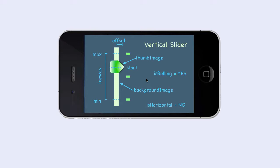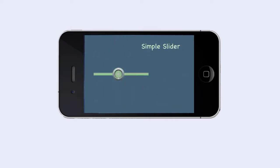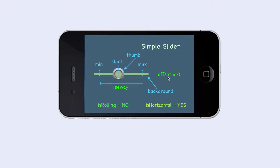In that case, we can give some of these parameters default values so that we do not need to specify them. Suppose that we have the following simple slider. Which parameters can be default for simple sliders? Simple sliders are horizontal, so isHorizontal can be set to Yes. Simple sliders always start at the center of the background, so offset can be set to 0. Simple sliders do not send rolling values to our program, so isRolling can be set to No.